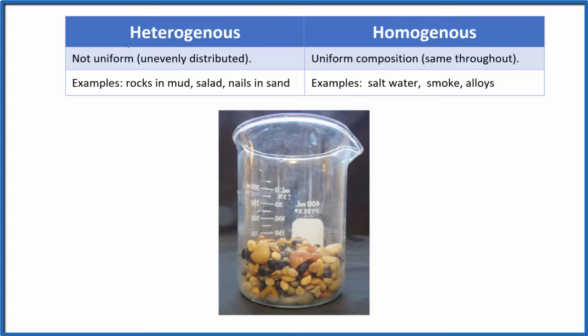For heterogeneous, we're talking about something that's not uniform. It's unevenly distributed — that means it's kind of in clumps. For homogeneous, it's the same throughout. It has a uniform composition.